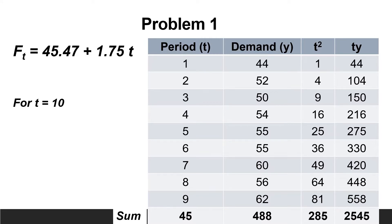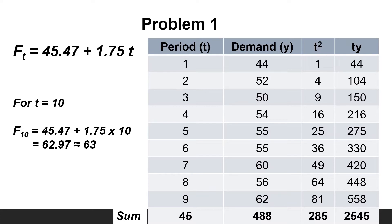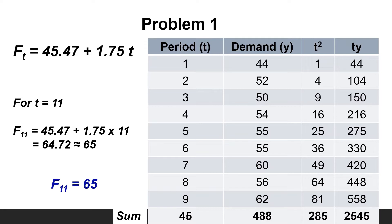To find f(10), substitute in the trend equation by t = 10. So f(10) = 45.47 + 1.75 × 10 = 62.97, approximately equal to 63. The forecast of period 10 is 63. Similarly, f(11) = 45.47 + 1.75 × 11 = 64.72, approximately equal to 65. The forecast of period 11 is 65.